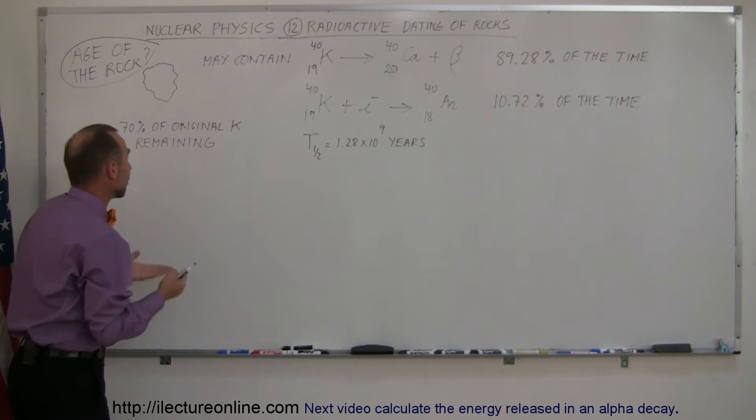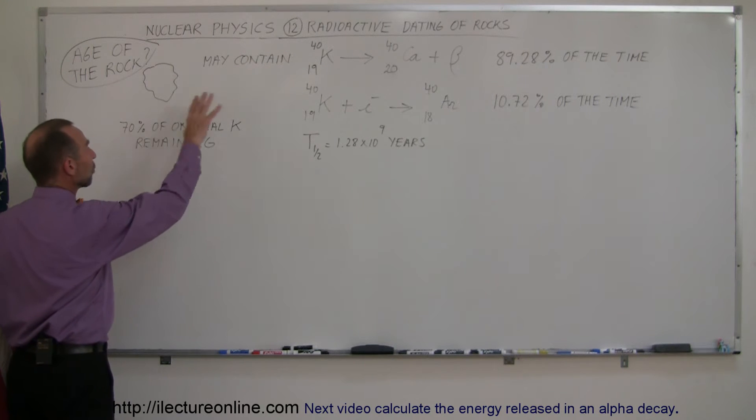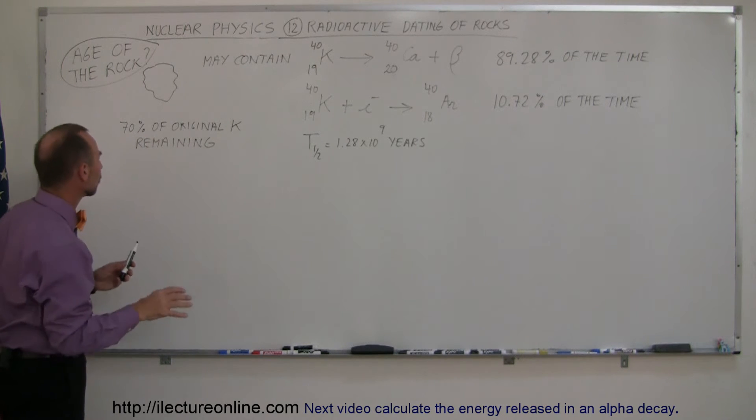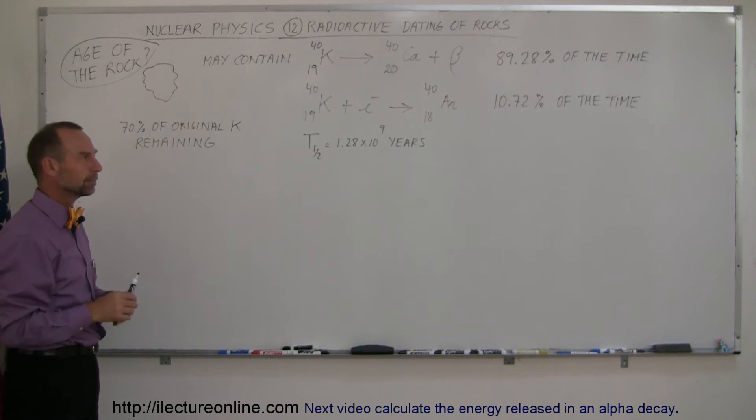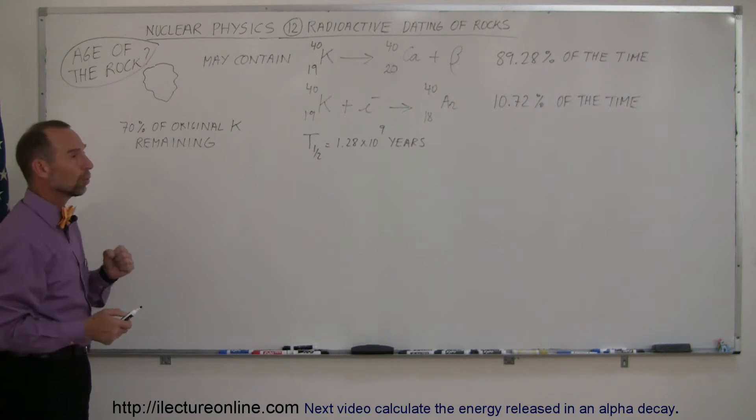we can then, for example, say that we found the rock and we determined through a process of chemical analysis that 70% of the original potassium is remaining. So if that's the case, let's make it into a problem: find the age of this rock.